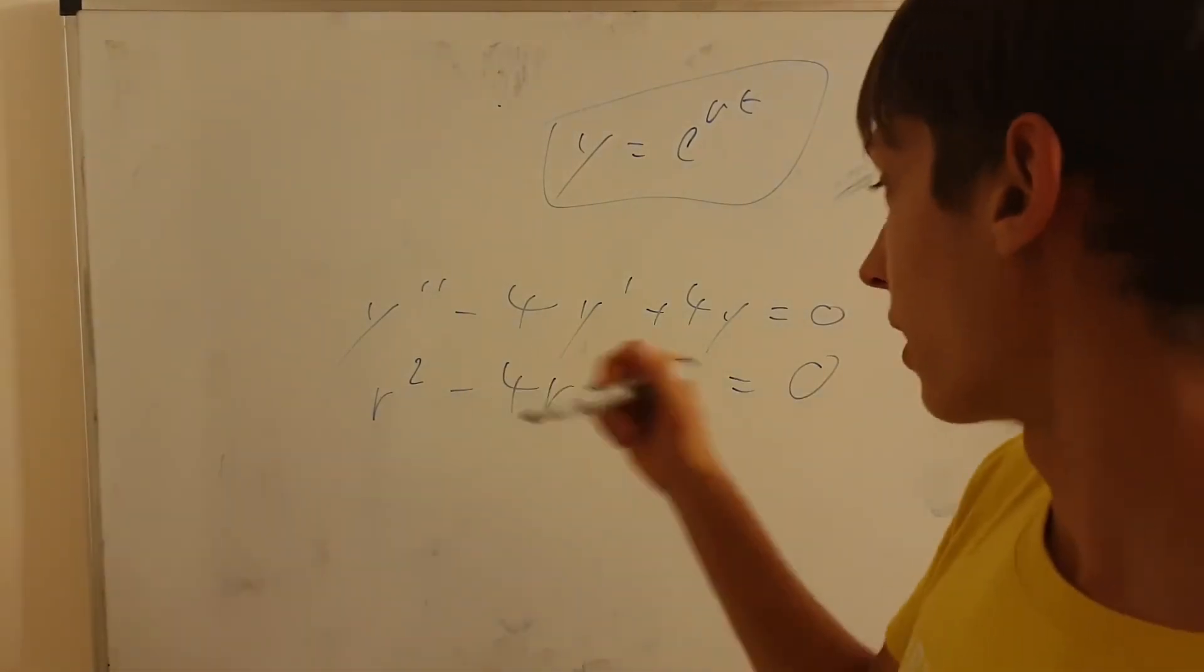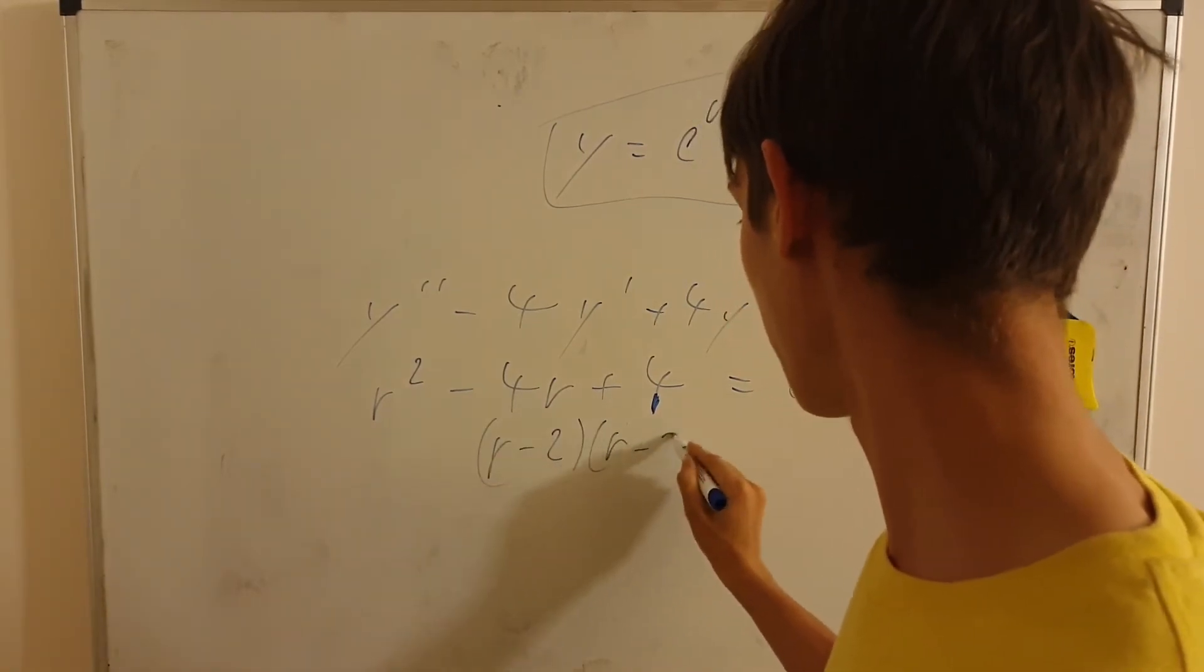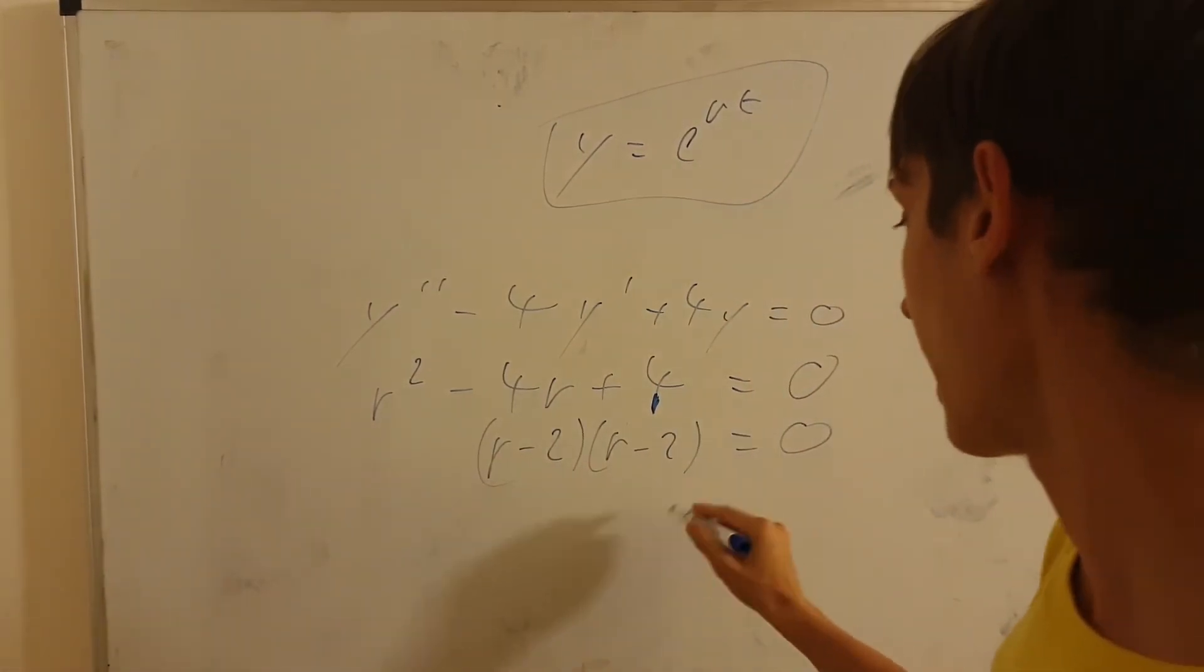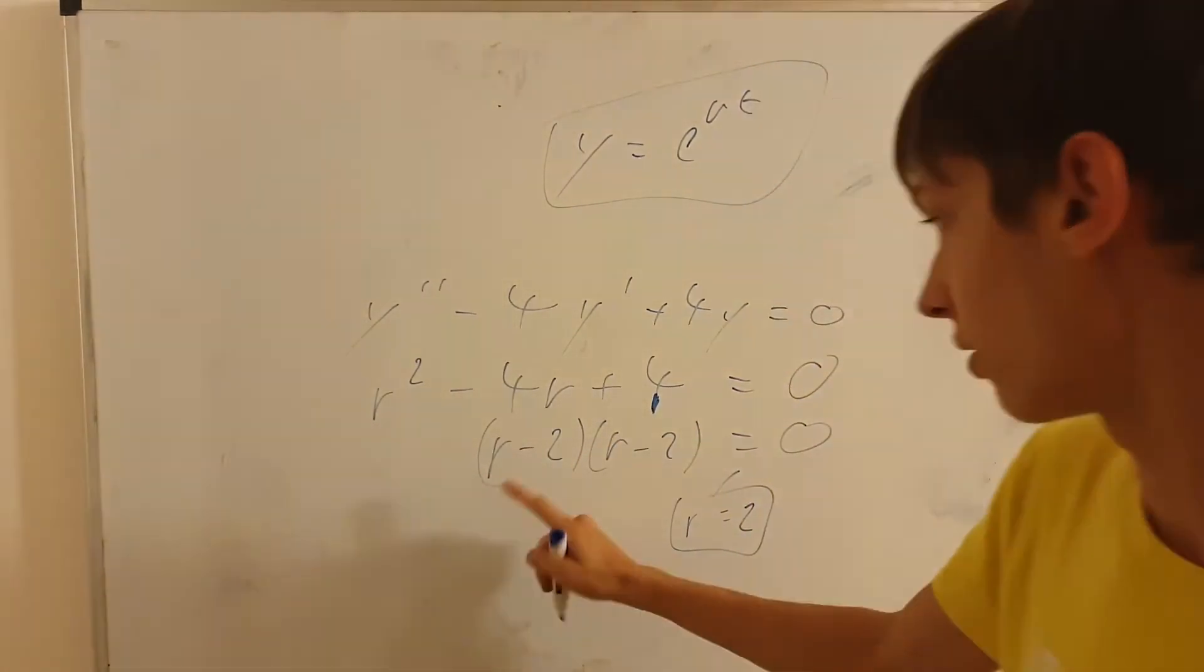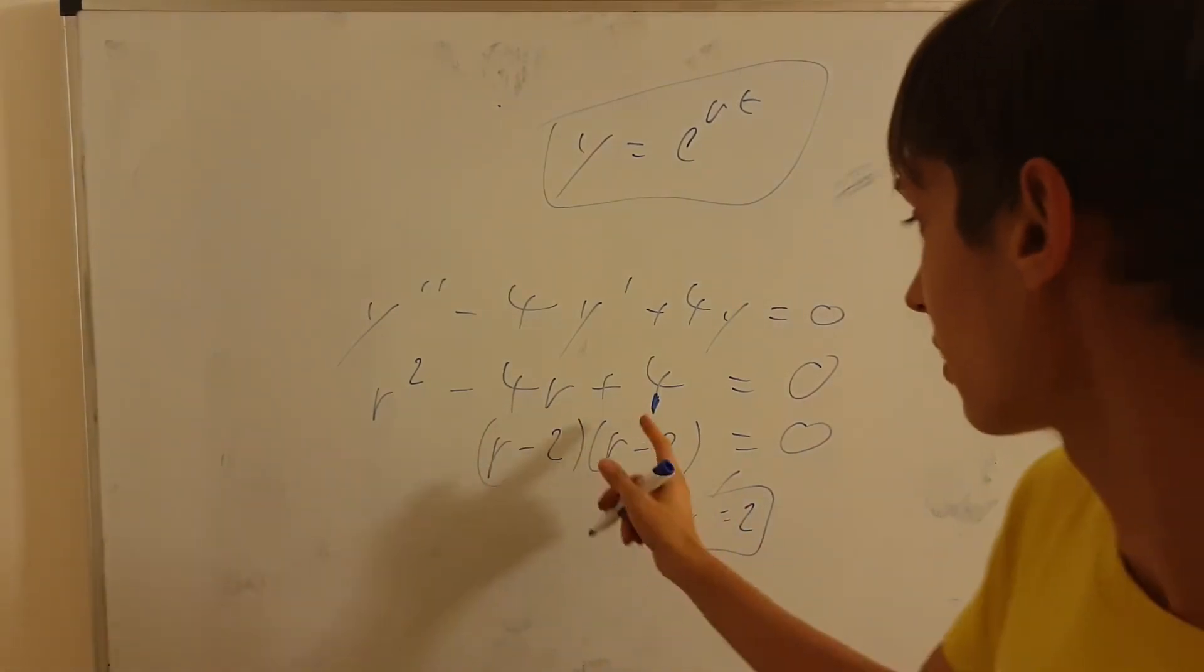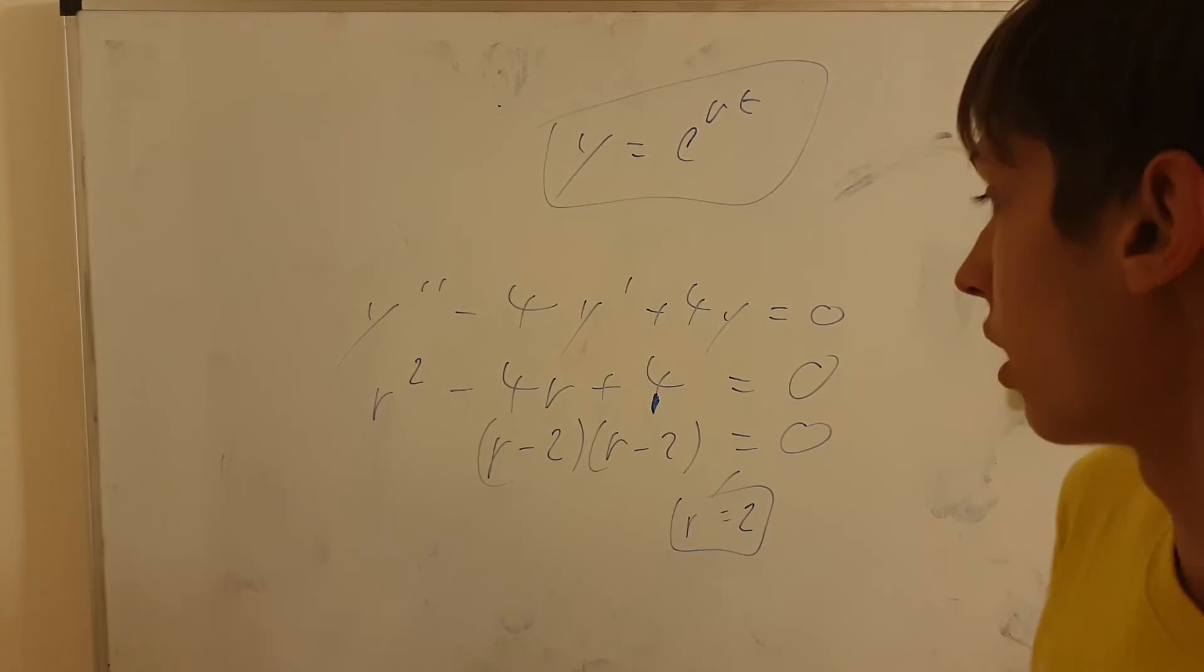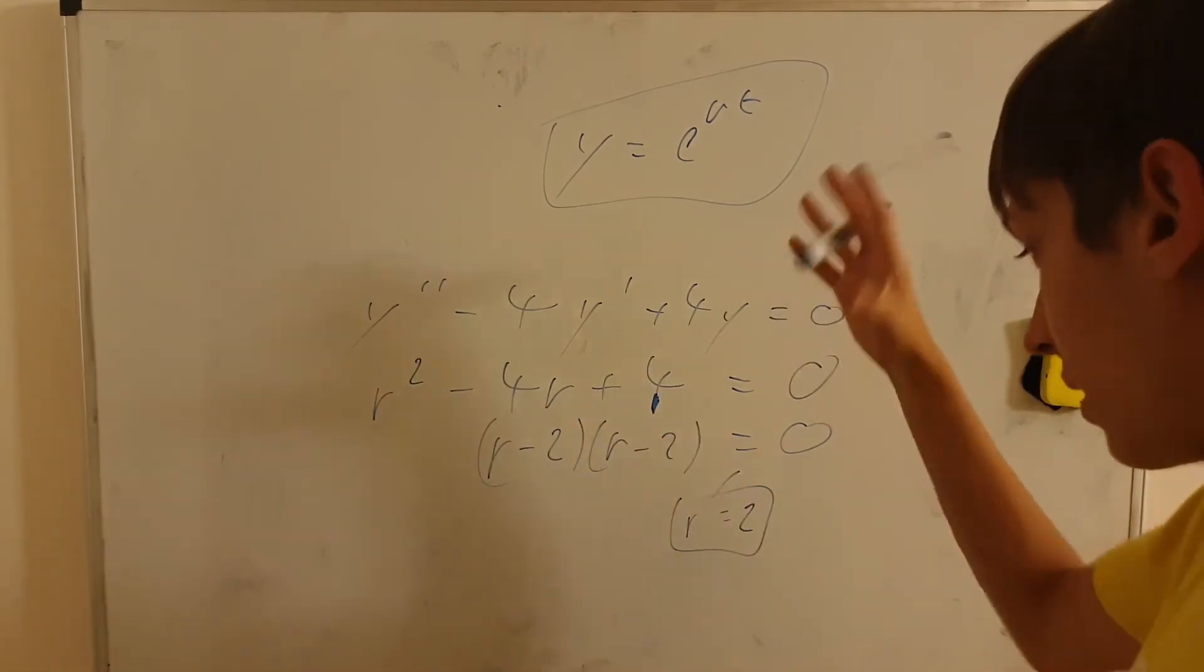Therefore, the solution for this particular one, again why I created it in the beginning, is because it has a repeated root. It has a root of 2, but it has a root of 2 twice, right? Now you can check that that is correct. It's just r squared minus 4r plus 4, which is the general formula for (r minus 2) squared.